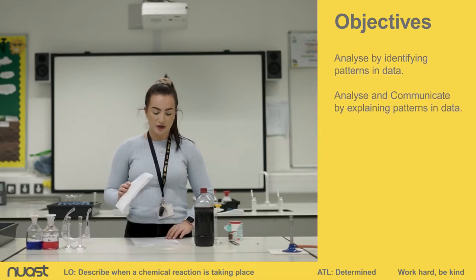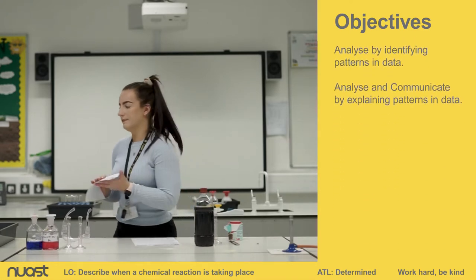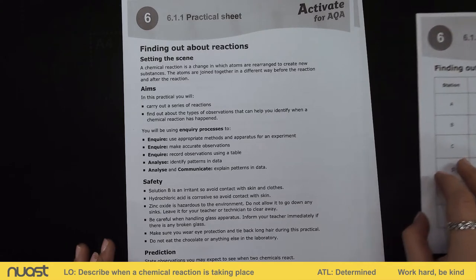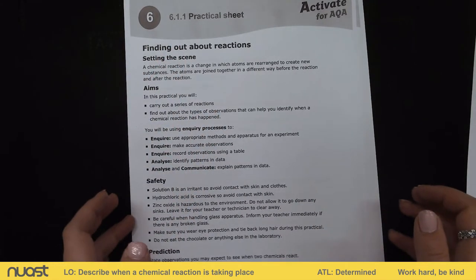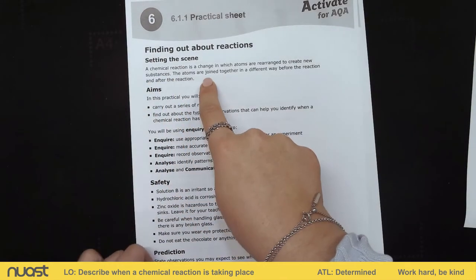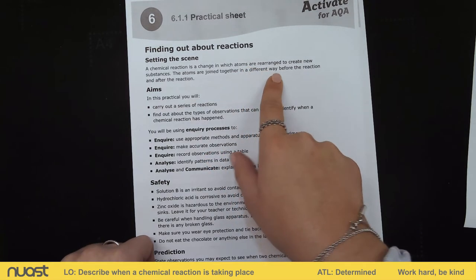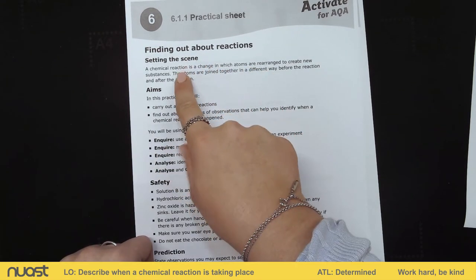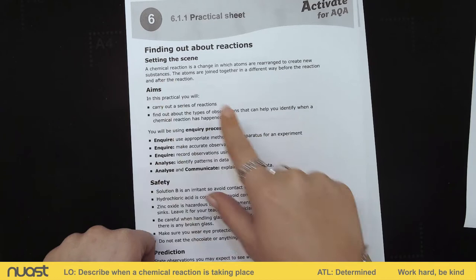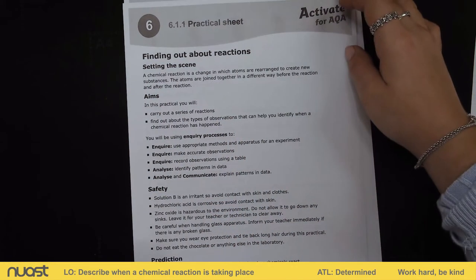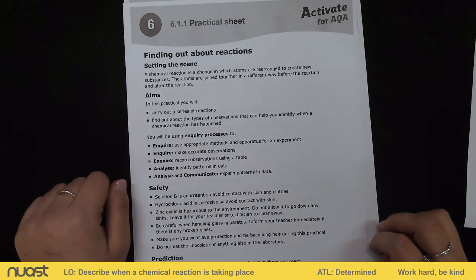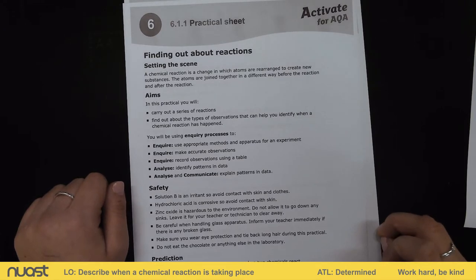I'm just going to go under the visualiser and we're going to have a look at this worksheet together. This is worksheet 6.1.1, 'Finding Out About Reactions.' Looking at the scene-setting section, it says a chemical reaction is a change in which atoms are rearranged to create new substances. Today we're looking at chemical reactions and also physical reactions and physical changes. Hopefully from your last lesson you'll remember some of the observations for each type of change.